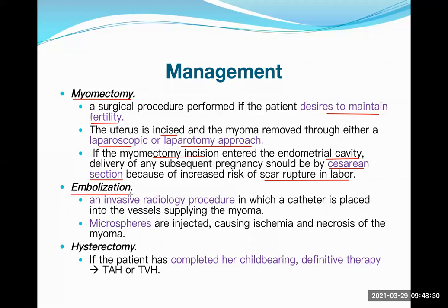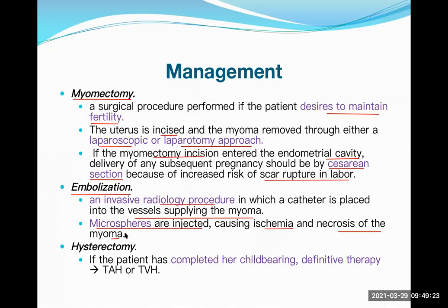Another management approach is embolization. The principle: if we occlude the blood flow to the fibroid, it will shrink in size. In uterine fibroid embolization, a catheter is placed into the vessel supplying the myoma and microspheres are injected, causing ischemia and necrosis of the myoma. This is an invasive radiological procedure. The last resort is hysterectomy, indicated once the patient has completed her childbearing.